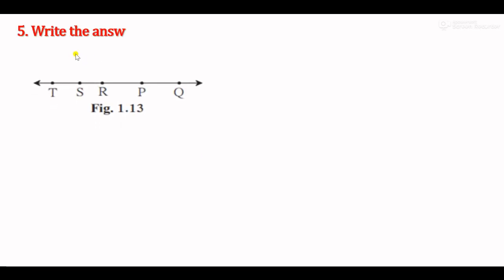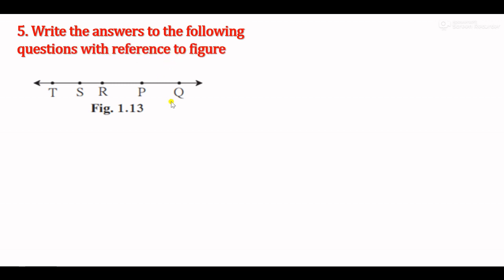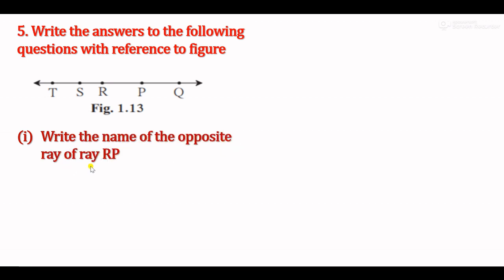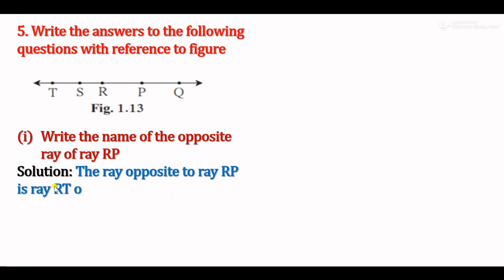Question 5: Write answers with reference to the figure. Sub-question 1: Write the name of the opposite ray of ray RP. RP means R is the starting point or initial point. The opposite ray would start from R and go in the opposite direction — you can name it ray RT or ray RS. So the ray opposite to ray RP is ray RT or ray RS.